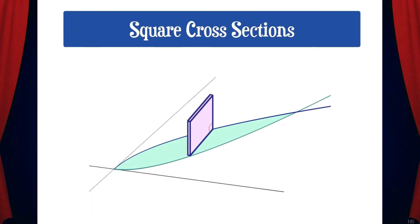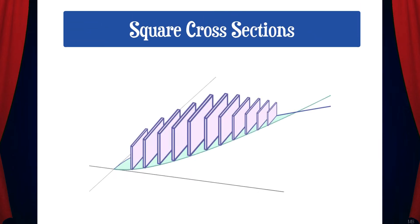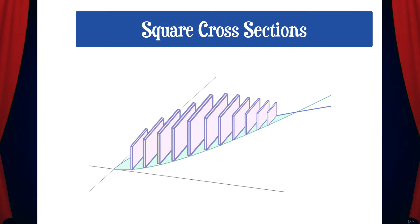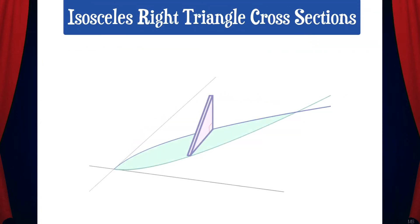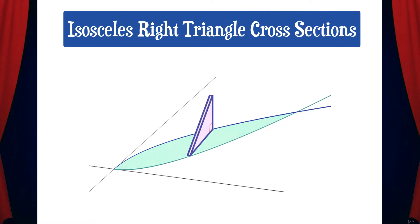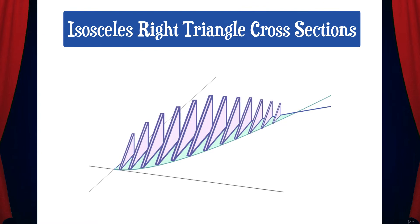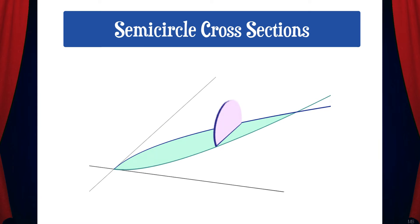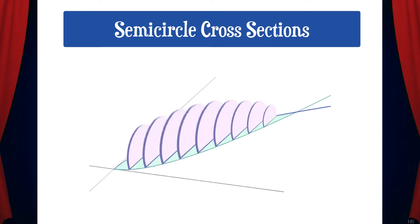For example, we might have a solid that has square cross-sections like this. If we put many of these square cross-sections side by side, a solid starts to emerge. We can also have solids with isosceles right triangle cross-sections, or even solids with semi-circle cross-sections. As you can see, we can have a variety of cross-sectional shapes — these are just a few examples.